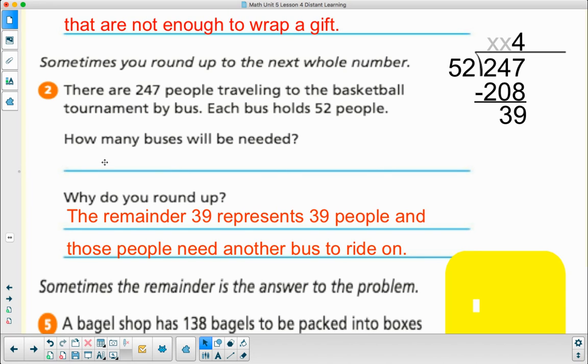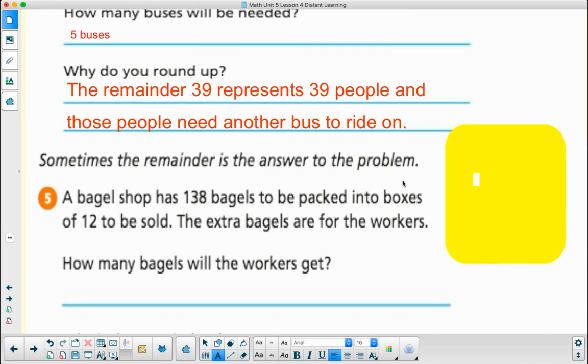The remainder 39 represents 39 people, and those people need a whole other bus. I'm going to add 1 to the 4 and say that I need 5 buses, because it'll take 5 buses to take all the people. These 39 people, 4 buses won't take those 39. They're only going to take 208 people, so I need 1 more bus. I can't take a part of a bus. I need a whole other 1 more bus.